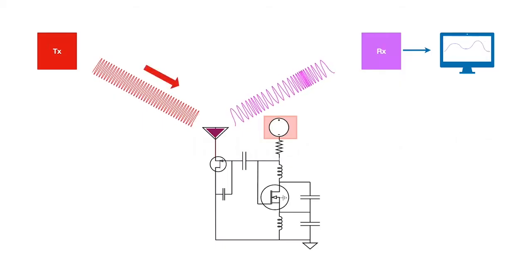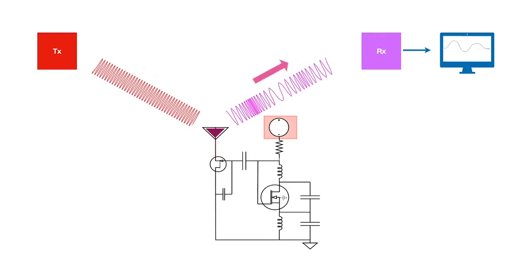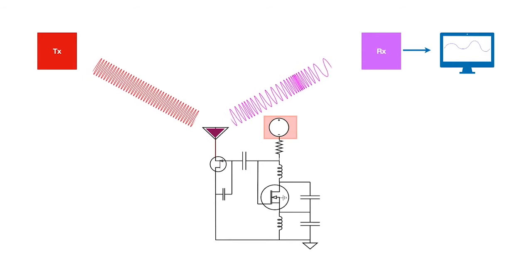A plane carrier wave that strikes the antenna is backscattered, modulated by the antenna impedance. This is received by an RF receiver and demodulated to extract sensor information.